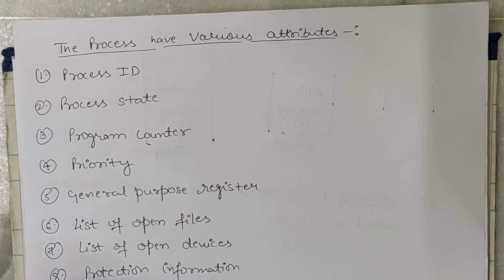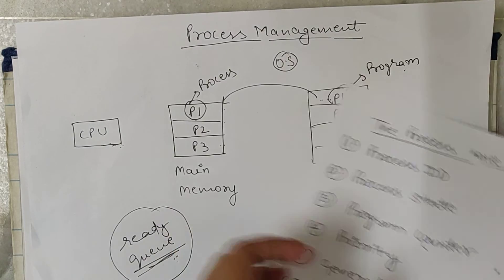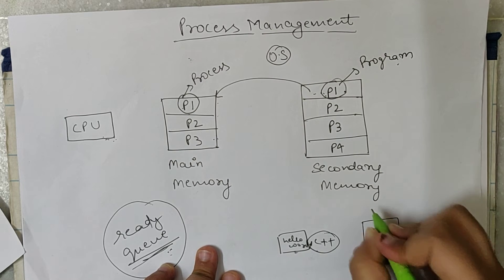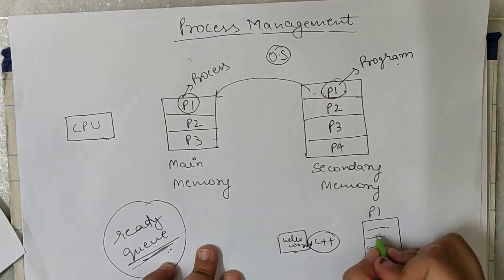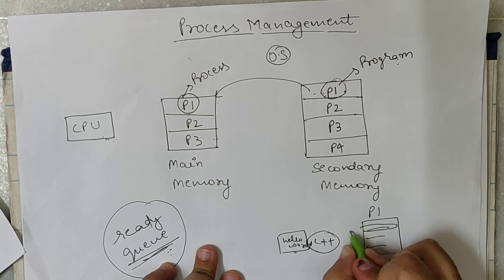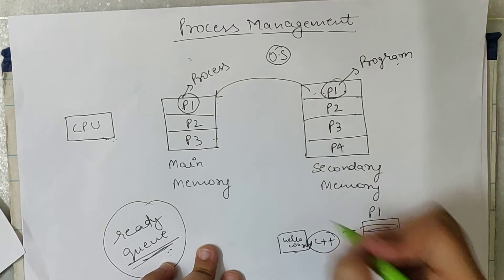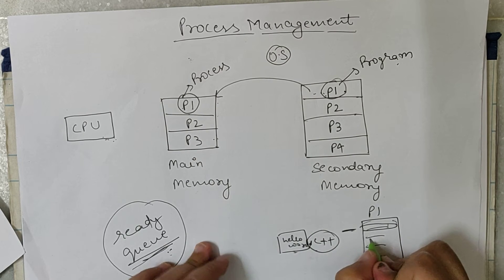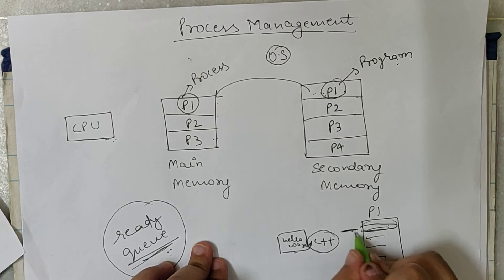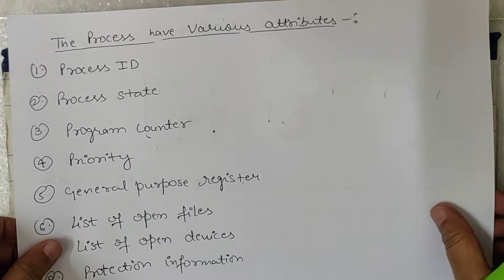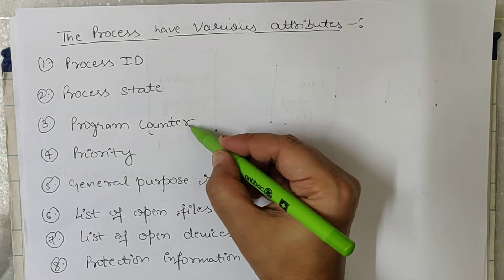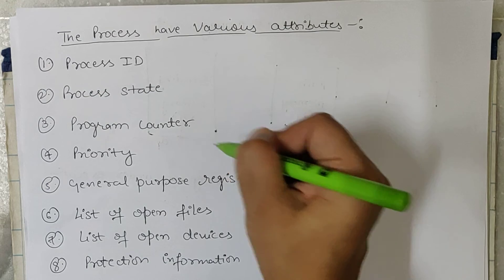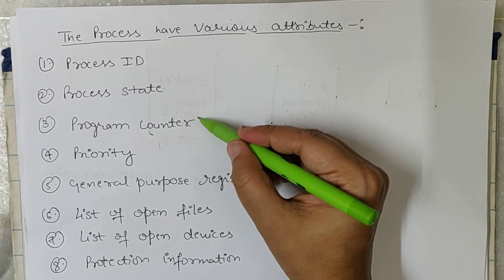Program counter means: you have a process with many instructions, and each instruction has an address. The CPU picks one instruction, executes it, then picks the next instruction and executes it. Each instruction has its own address. The program counter stores the address of the next instruction, and the CPU finds the address of the next instruction from the program counter.